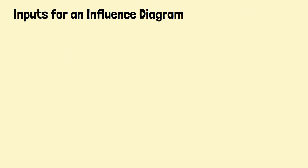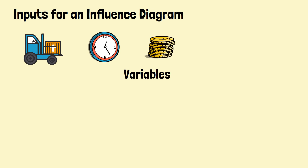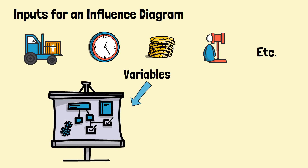To create an influence diagram, we'll need to identify the variables that can affect the project or decision. These can include things like resources, timelines, costs, regulations, and more. Once we've identified these variables, we can then draw a diagram that shows how they're related to one another.